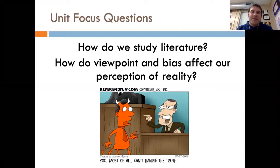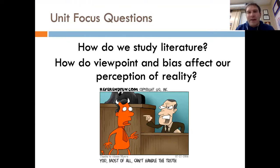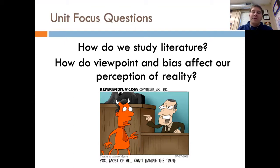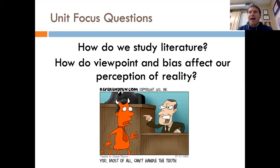So here's what we're talking about — things to keep in mind while we're interacting with this. Why do we study literature, and how does viewpoint and bias affect our perception of reality? We're all human, and literature is a human expression of how human beings act. You have to deal with ideas that deal with loss, inequality, prejudice, heartache — all that fun stuff. Literature is that human universality that we're going to try to tackle.